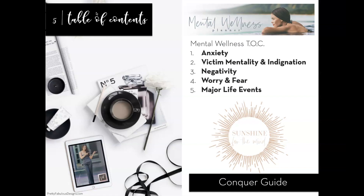Next, I came up with a table of contents. This really helps me narrow things down because there are so many things you could cover under mental wellness. These were the five major areas I felt I wanted to address. I knew I wanted this to be more of a 'conquer guide,' which is why I gave the planner the tagline 'Sunshine for the Mind' — I wanted it to be uplifting, hopeful, and help you feel better about yourself, life, and your situation.